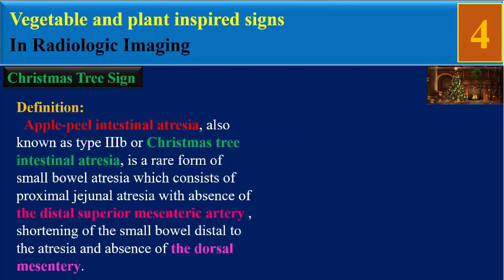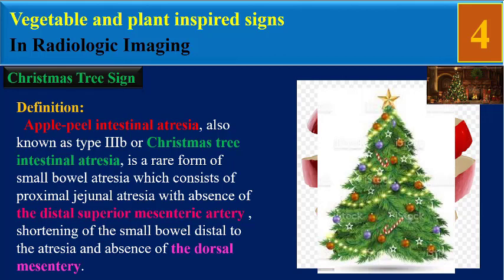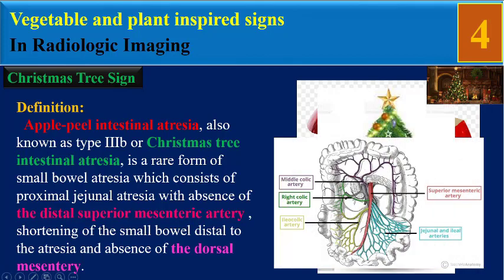What is the definition of Christmas tree sign? Apple peel intestinal atresia, also known as type 3b or Christmas tree intestinal atresia, is a rare form of small bowel atresia which consists of proximal jejunal atresia with absence of distal superior mesenteric artery.